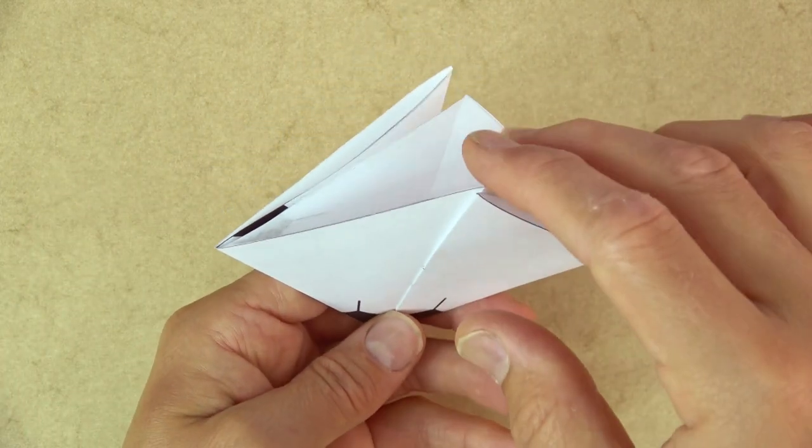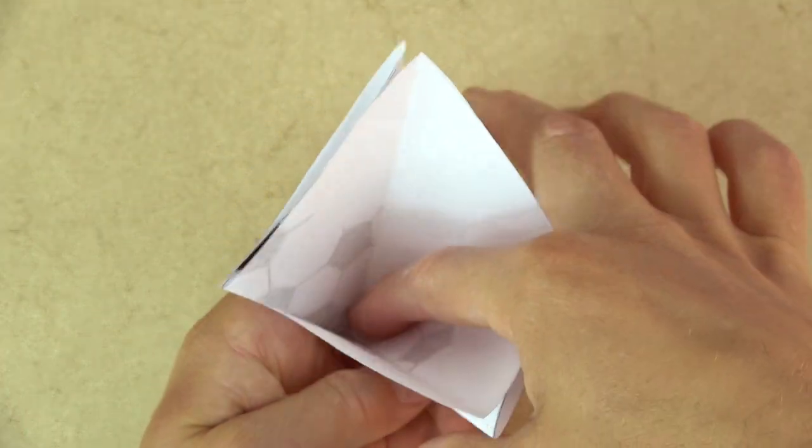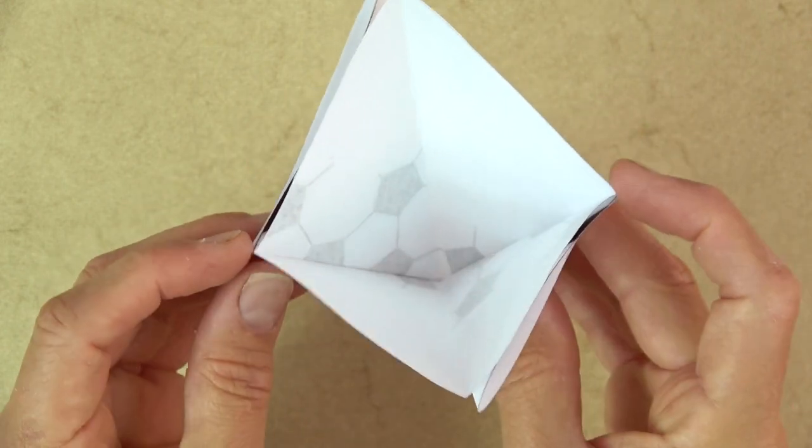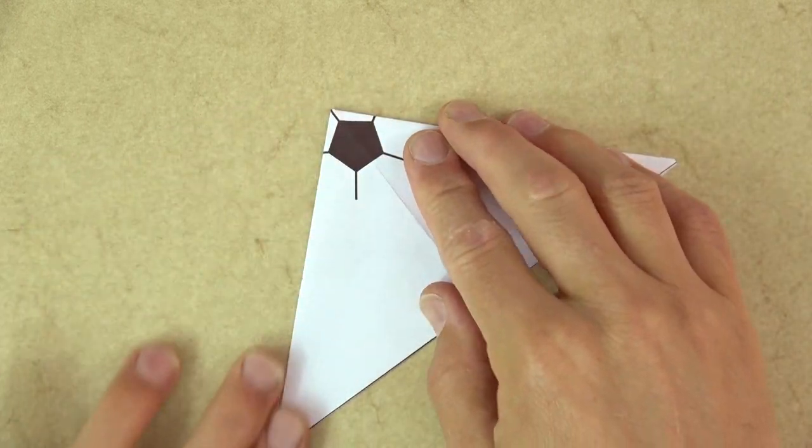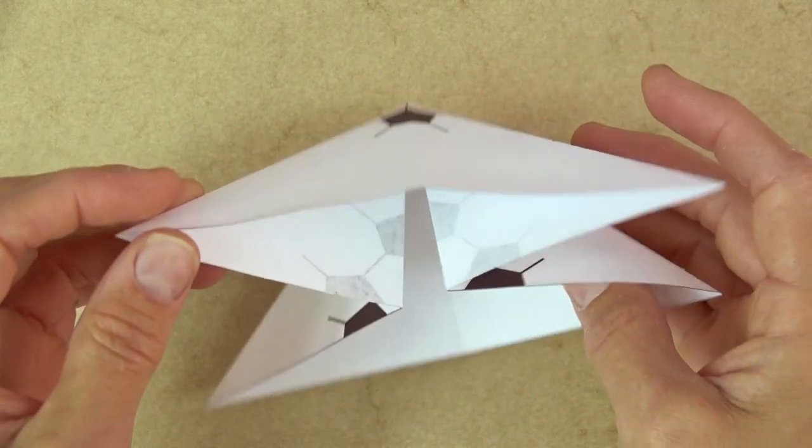And now reach in to the big pocket, put your finger inside, and push the left and right sides together. And flatten like this. And here is the water bomb base.